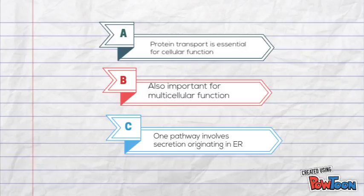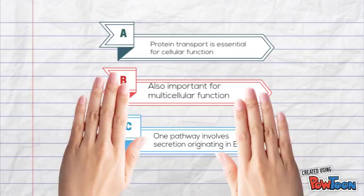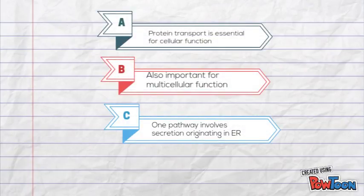Proteins and other cargo need to be manufactured by cells for their own cellular processes. However, they also need to be used for the cellular functions of other cells in a multicellular organism. The latter involves secretion of proteins from the manufacturing cell to the target cell.